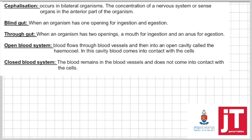A blind gut is when an organism has one opening — one opening for ingestion and egestion. A true gut is when an organism has two openings: a mouth for ingestion and an anus for egestion.